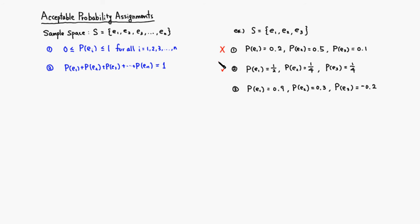How about the last one? You have 0.9, 0.3, now you have negative 0.2. That will violate condition number one. Even though 0.9 plus 0.3 plus negative 0.2 would be exactly equal to 1, this is not acceptable because it violates the first condition. That is the acceptable probability assignment; you just have to satisfy these given conditions. I hope that this was clear.